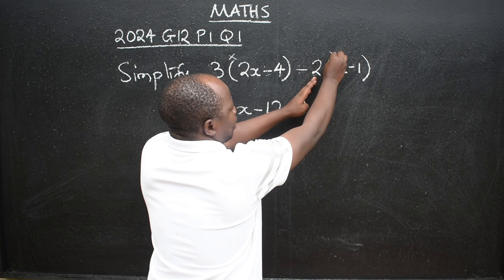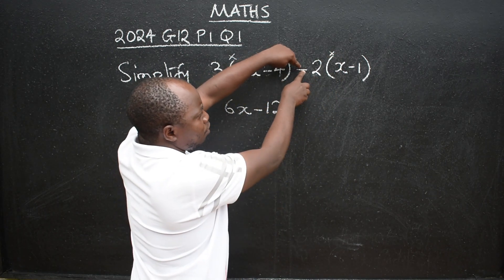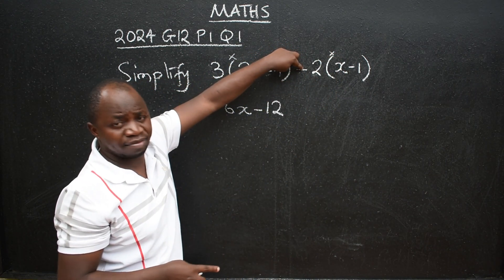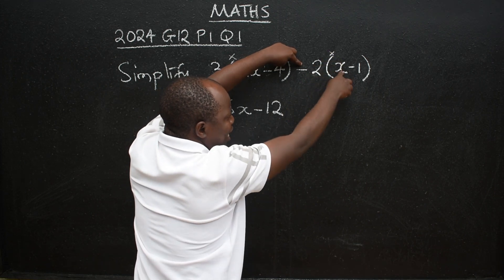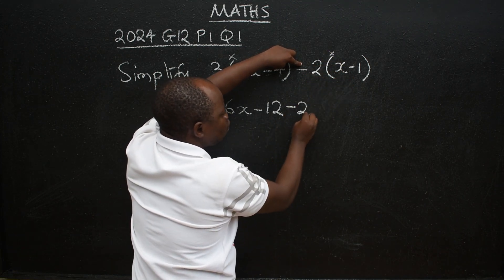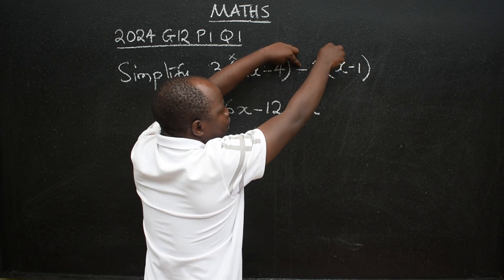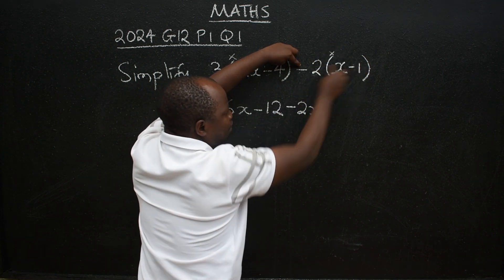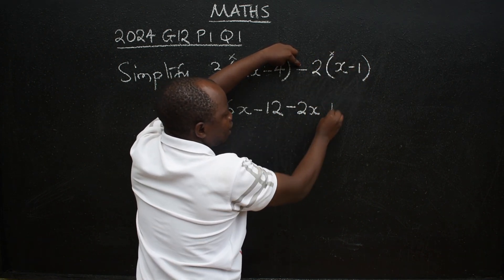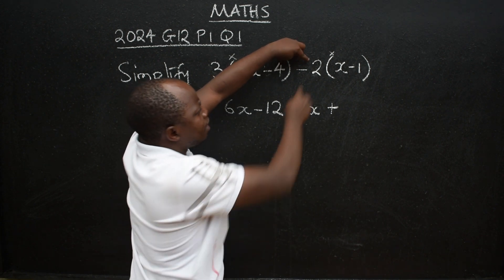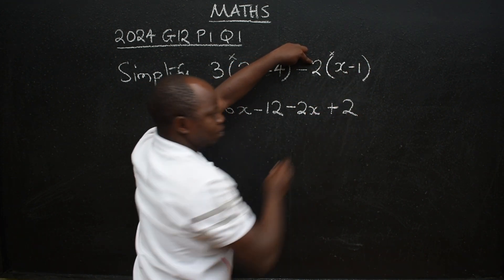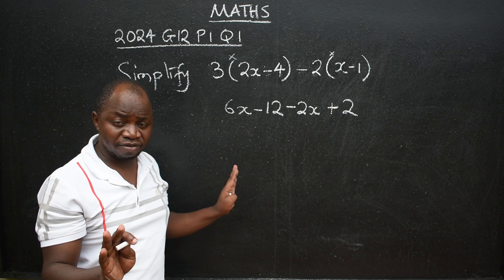You do the same on this side. You multiply. You are multiplying together with the sign. So negative 2 times x, it will be negative 2x. Then negative times negative. Negative times negative will turn into a positive. Then 2 times 1 is 2. The brackets have gone.